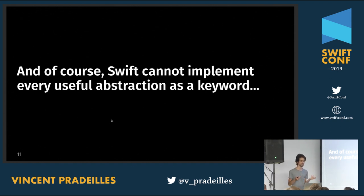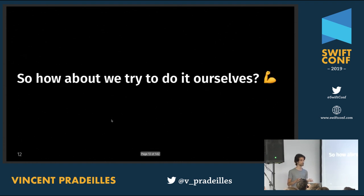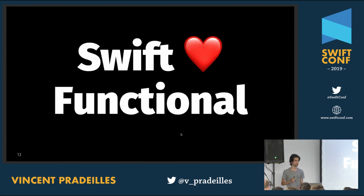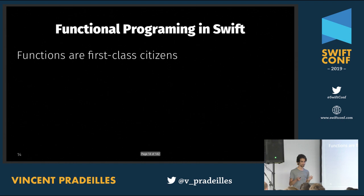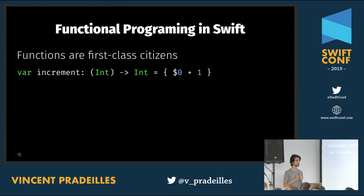Swift can't integrate everything into the language — that would be crazy. So what if we try to implement our own pseudo-keywords that offer the same ease of use and functionality? We can start by recognizing that Swift loves functional programming. In Swift, functions are first-class citizens, which means three things. First, a function can be stored in a variable.